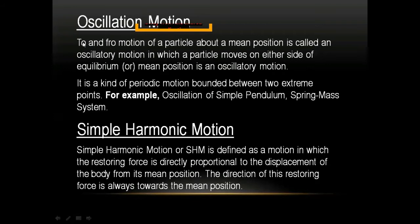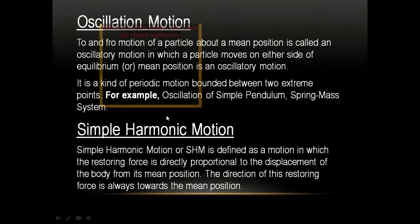When a body moves in to-and-fro motion, it repeats itself in equal intervals of time, which is why every oscillatory motion is a periodic motion. The key difference is: oscillatory motion involves to-and-fro movement about a mean position, while periodic motion simply means any motion that repeats in equal time intervals.